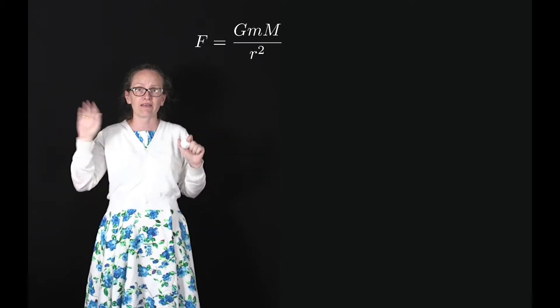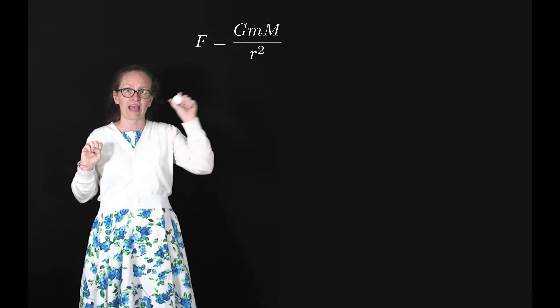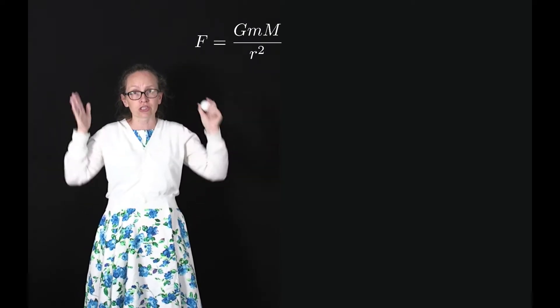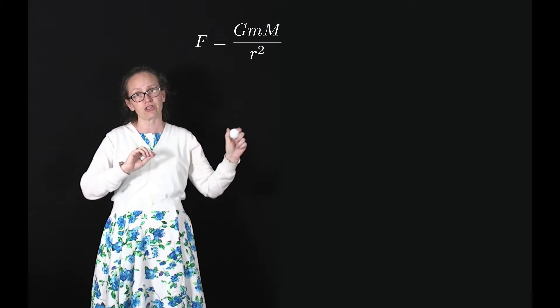Previously we've considered the gravitational potential energy close to the surface of the earth, but let's now consider astronomical distances. At astronomical distances we're going to need to use Newton's law of universal gravitation — F equals GMm divided by r squared — to describe the gravitational force.